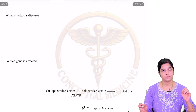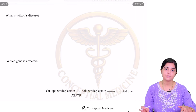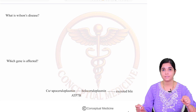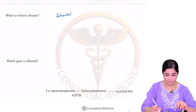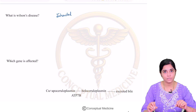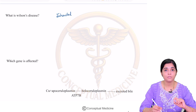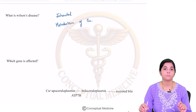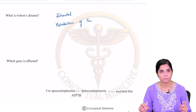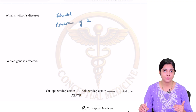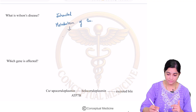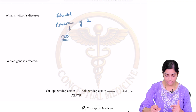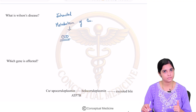So what is Wilson's disease? Wilson's disease is basically an inherited disorder of the liver where there is a problem with the metabolism of copper. Over the course of time, because there is a problem with the metabolism of copper, it finally leads to a chronic liver disease.